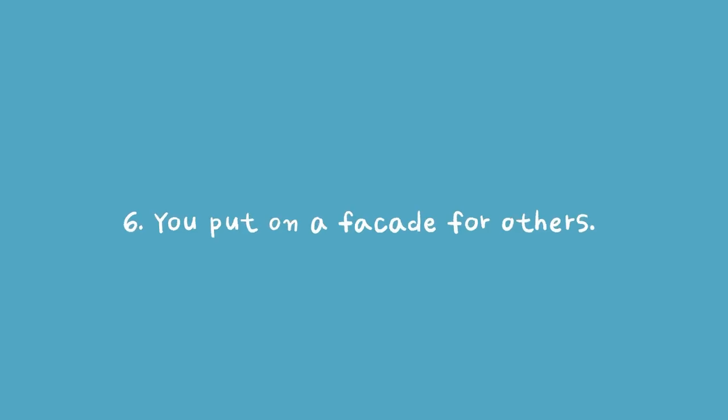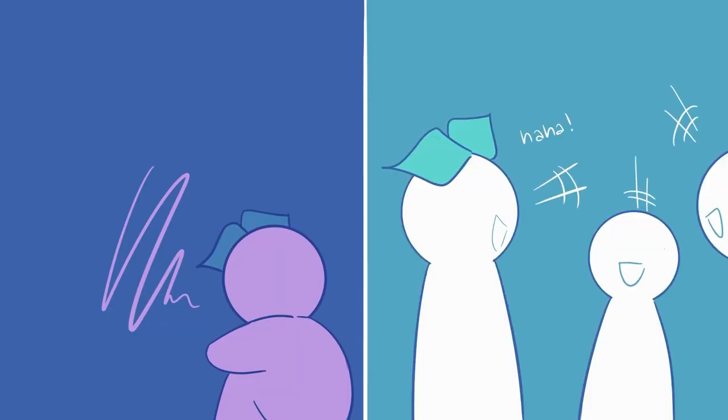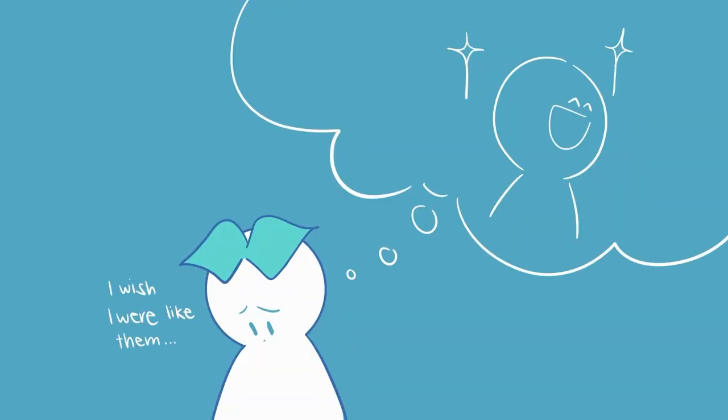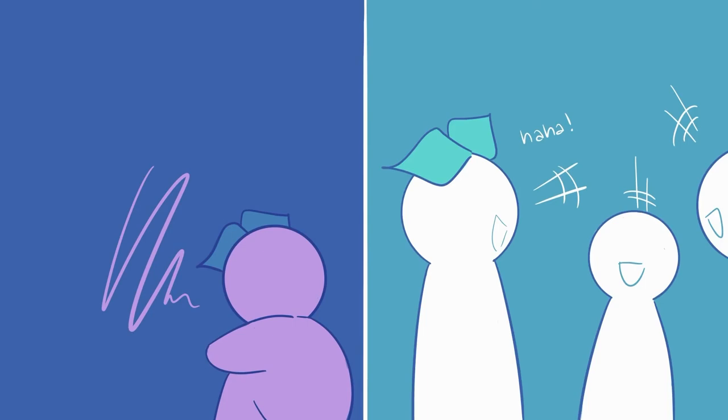Six, you put on a facade for others. You're one way when you're by yourself and then another when you're around other people. You wear a mask and don't let other people see the real you because you hate who you are. You try so hard to fit in and be liked by everyone and you constantly wish that you were someone else. You feel ashamed of your true self and you think that no one will ever be able to accept you, so you'd rather pretend to be someone you're not.